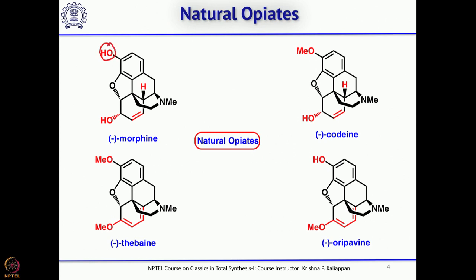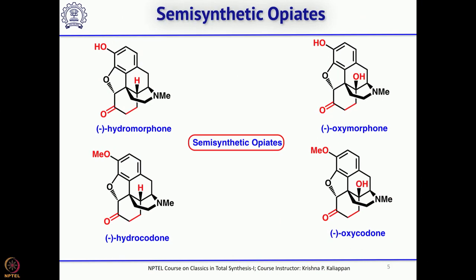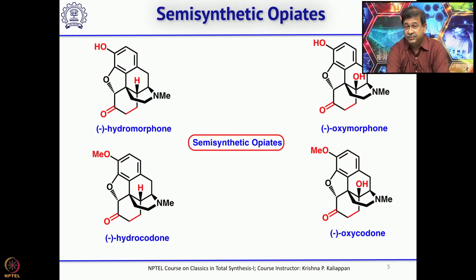There are several analogues, some natural. For example, if the phenolic hydroxyl group is methylated, it is called codeine. If both hydroxyl groups are methylated, that natural product is called thebaine. If the phenolic hydroxyl group is free and the allylic alcohol is oxidized to a ketone, forming the dienol ether, that is called oripavine. These are all naturally occurring.